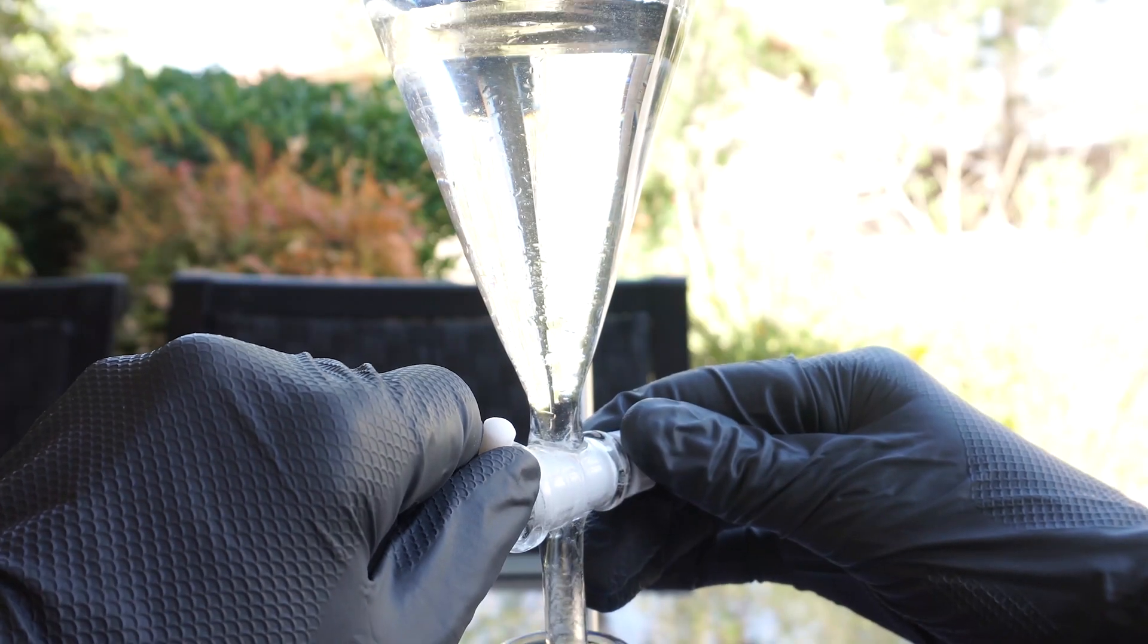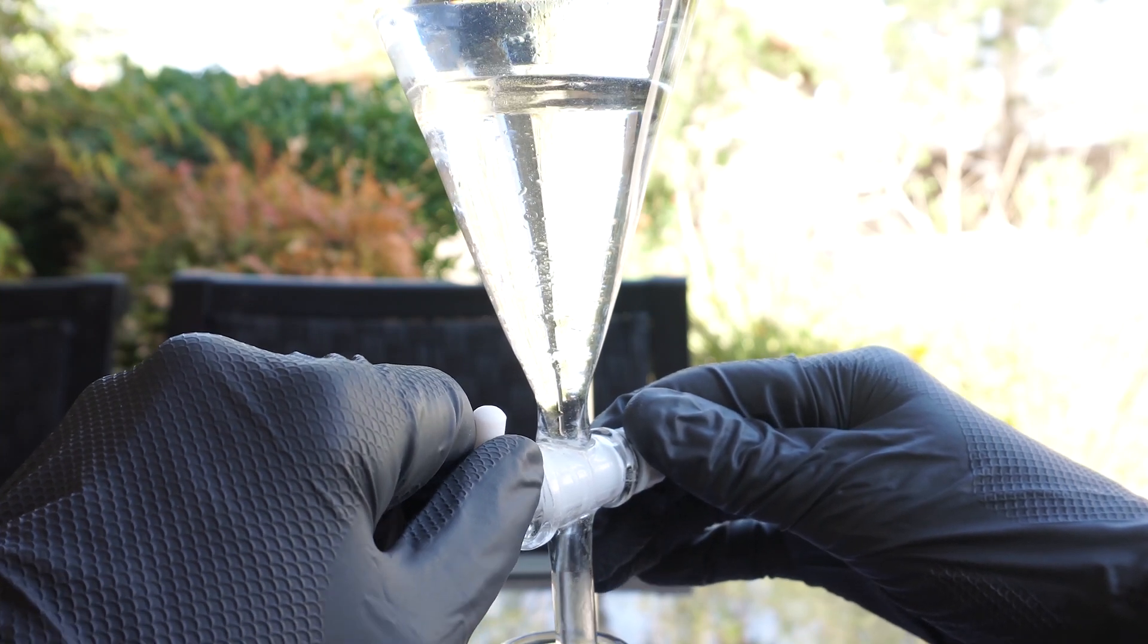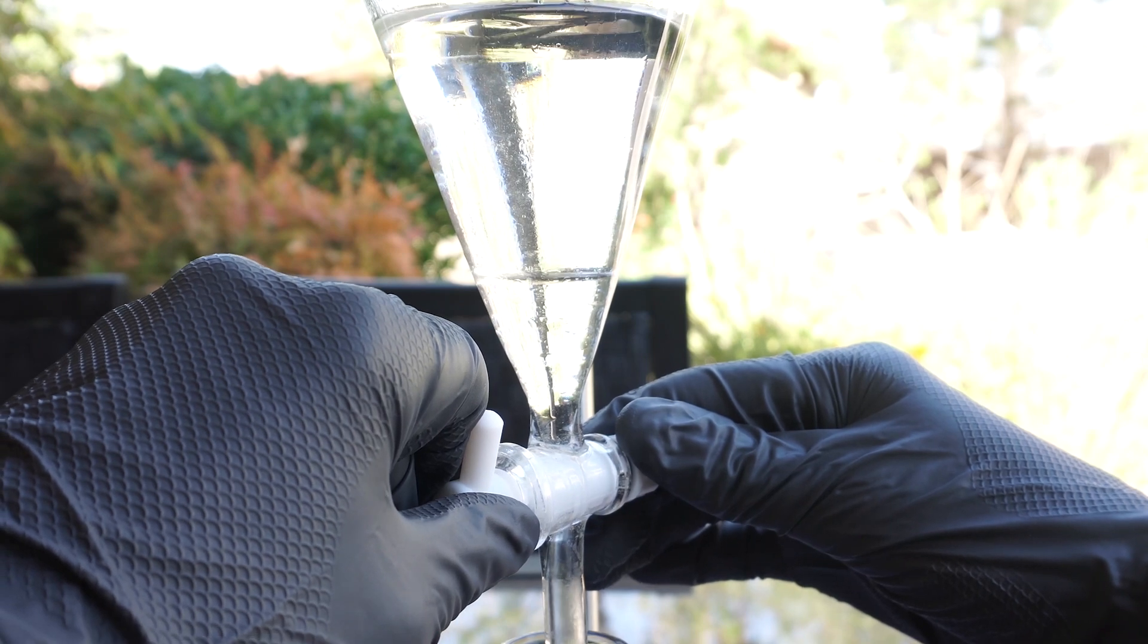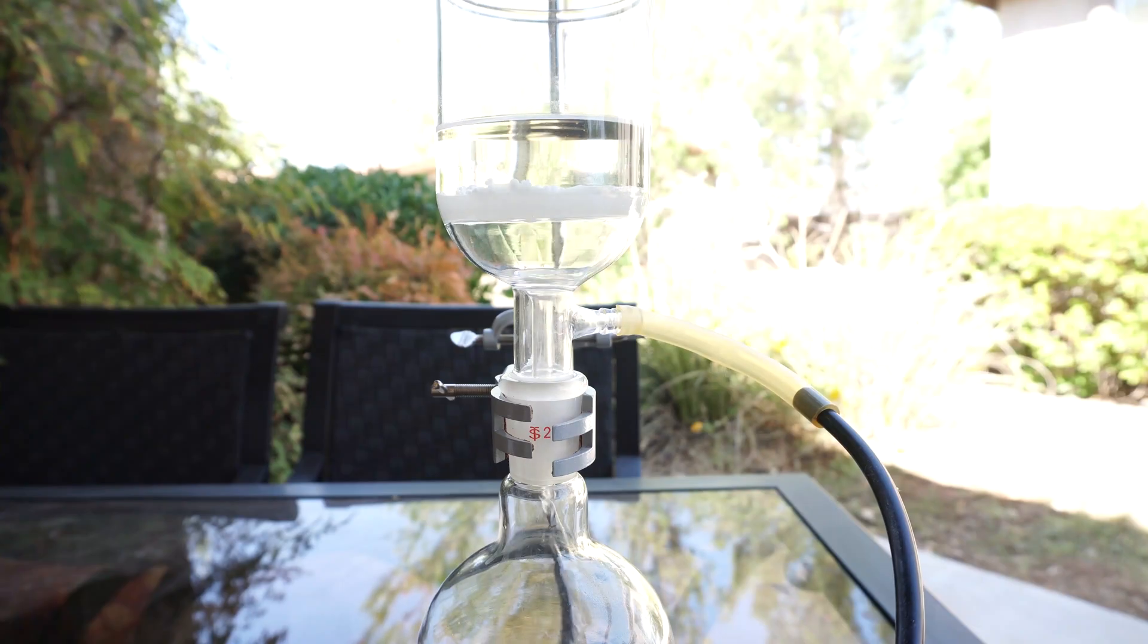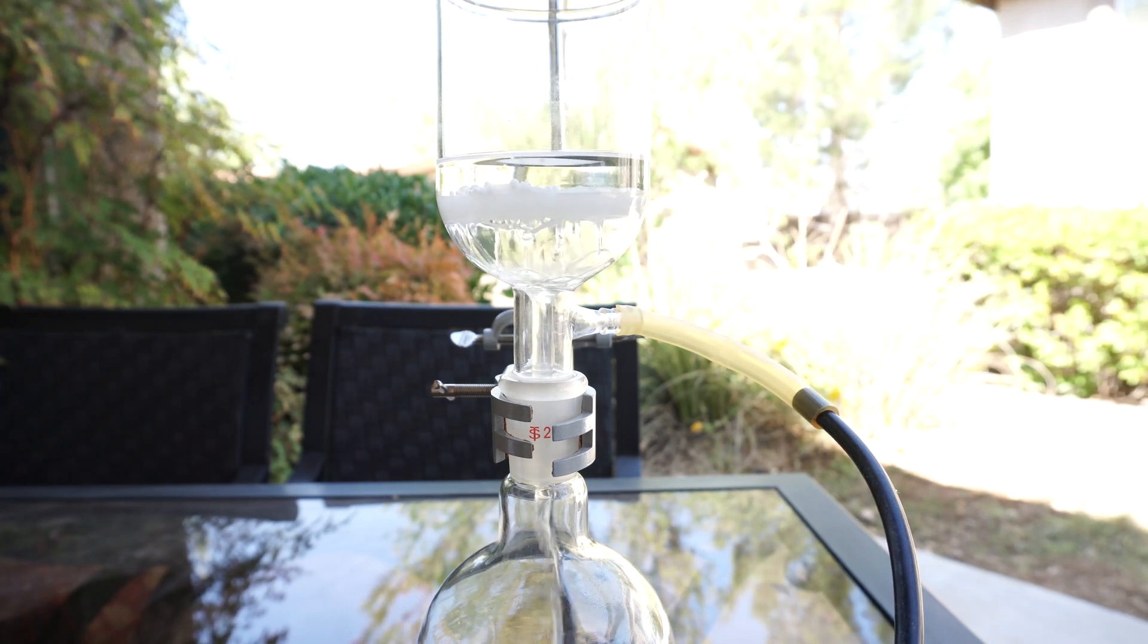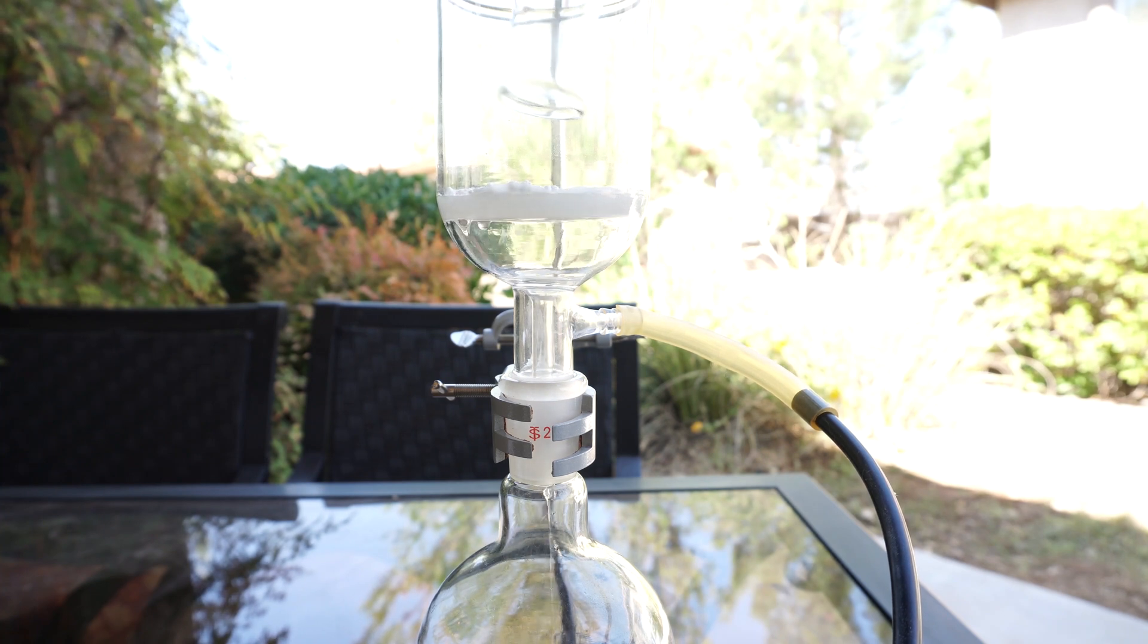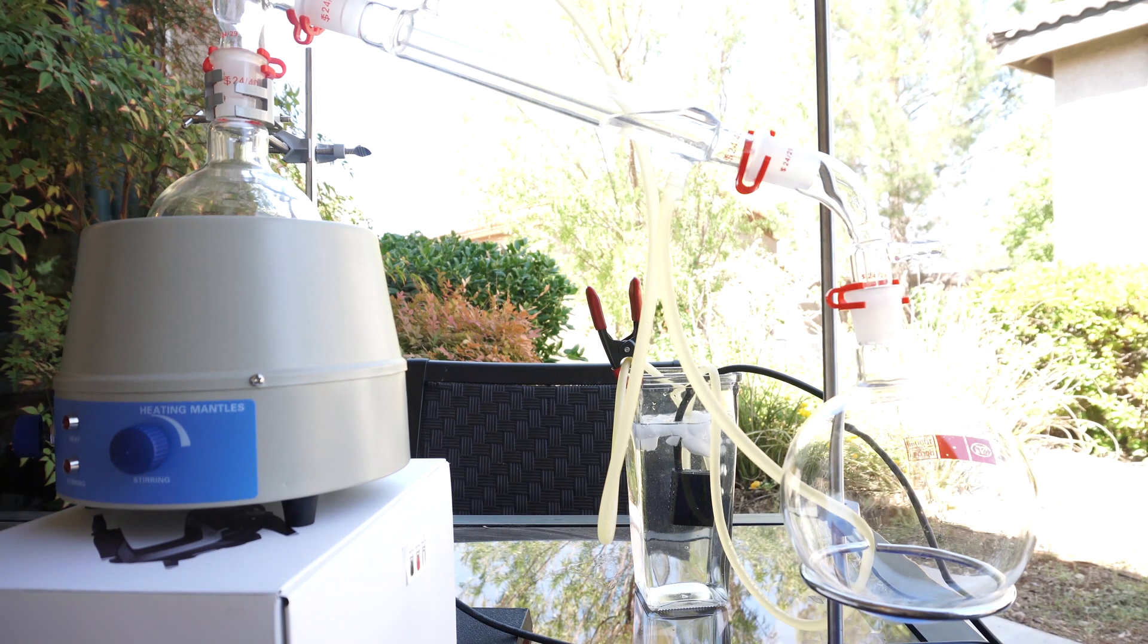Then I separated out the DCM into a flask containing calcium chloride to continue the drying. From here, I filtered out the calcium chloride from the DCM with a vacuum. I filtered it straight into a boiling flask because from here we'll boil off our DCM to recover it, which should leave us with pure cinnamaldehyde oil.